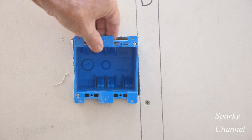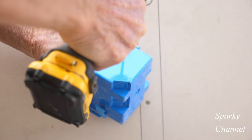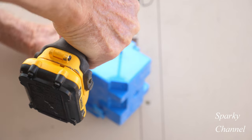Hey this is Bill for Sparky Channel and today I've got a question for you. Is it okay to take a Carlon old work box, that is the kind with the two wings that you tighten up and they tighten on to the back of the drywall.